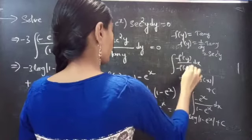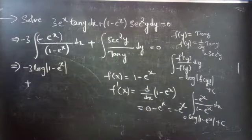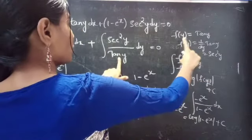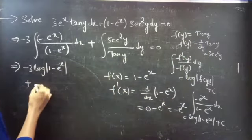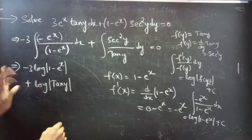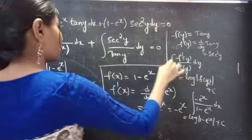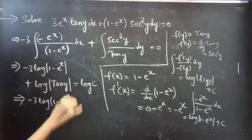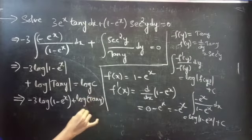Using the formula, the integral of f'(y)/f(y) dy equals log|f(y)|. With f'(y) equal to secant squared y and f(y) equal to tan(y), this gives plus log|tan(y)|. Since both terms are in log, we take the integral constant as log c. So we have: minus 3 log|1 minus e^x| plus log|tan(y)| equals log c.